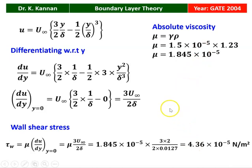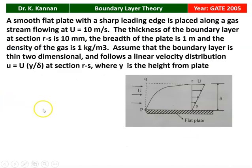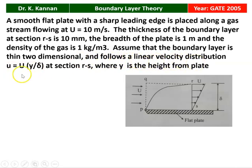That is the answer: the wall shear stress for the given situation. The next question is from the 2005 question paper. A smooth flat plate with a sharp leading edge is placed along a gas stream flowing at U equal to 10 meters per second. The thickness of the boundary layer at section RS is 10 millimeters, and the breadth of the plate is 1 meter with a gas density of 1 kg/m³.